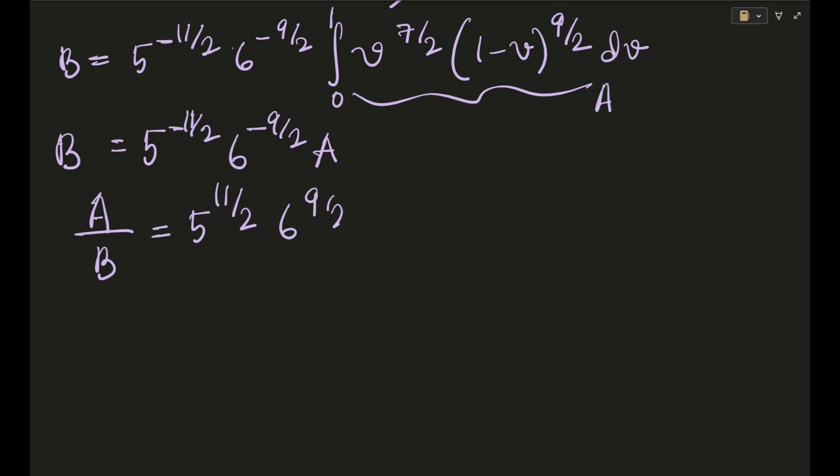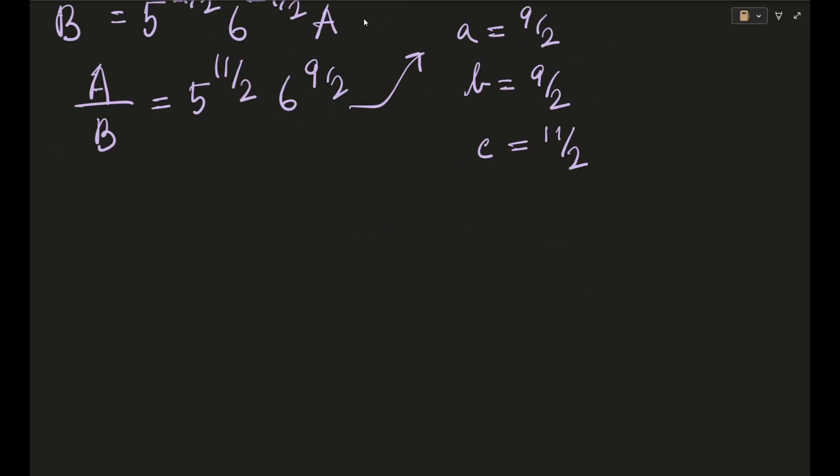So from here you will basically get A/B as your 5^(11/2) 6^(9/2). So from here your a is 9/2, b is 9/2, c also will become 11, okay not also, c will become 11/2. Okay and now why basically is this happening because they had asked the value of ln a - ln b and